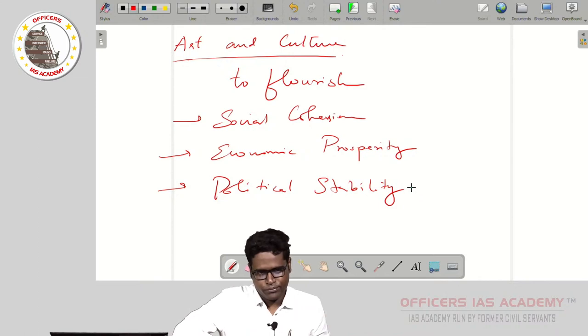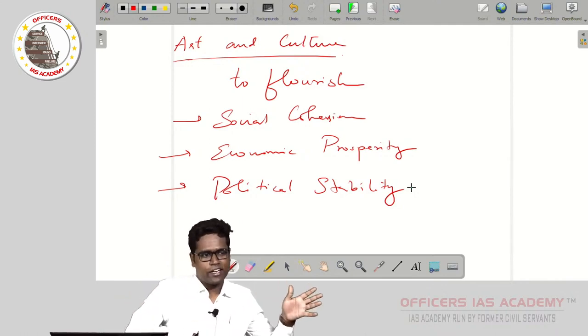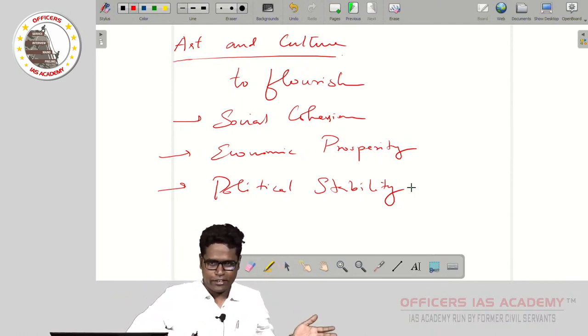So in any dynasty, whenever they ask you why something flourished, your introduction will be this only. You will say that so-and-so dynasty provided political stability after a long period of time, because of which there was economic prosperity in the kingdom.